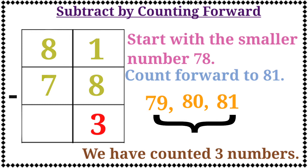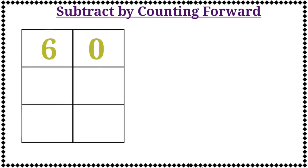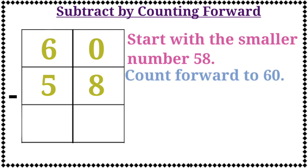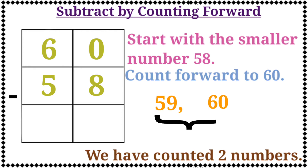The next example is 60 minus 58. First, we will start with the smaller number 58, then count forward to 60. Let's count: 59, 60. Now we have counted 2 numbers. So the answer is 2. Let's write the number 2 in the box.